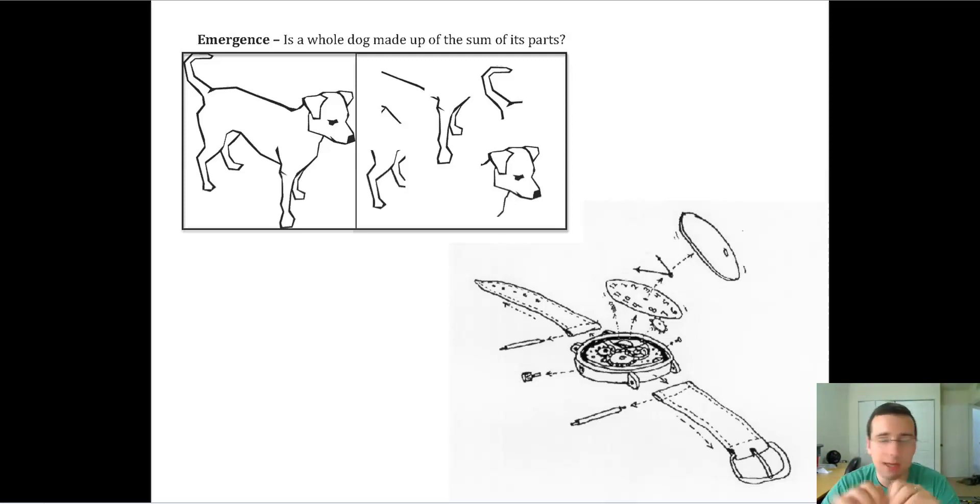You can basically get this dog and separate it into its constituent parts. And then it doesn't really look like a dog anymore, but if you put them together, you basically make a dog. So the dog doesn't exist until all those parts are put together, but it also couldn't exist without any of those parts. And so what is the dog? Is it the whole or is it the sum of its parts?